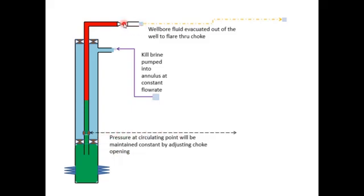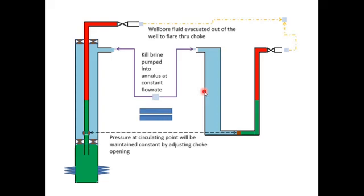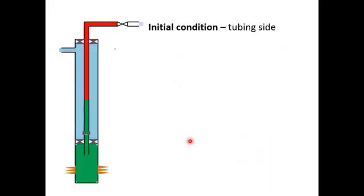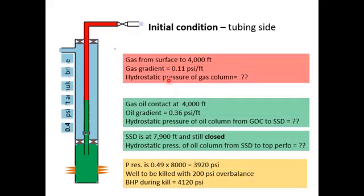To simplify, we often draw a diagram like this: one side is the annulus and the other side is the tubing. When we pump fluid into the annulus, the fluid inside the tubing will be displaced upward and will change. However, the fluid below the circulating point will be considered unchanged. Now let's look at the initial conditions, concentrating inside the tubing.